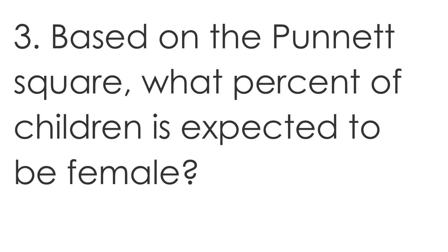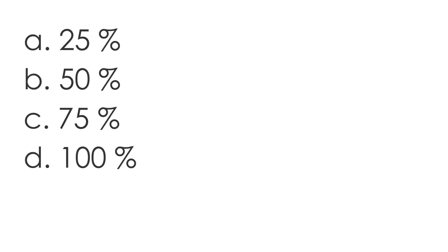Question 3: Based on the Punnett square, what percent of children is expected to be female? A. 25%  B. 50%  C. 75%  D. 100%.